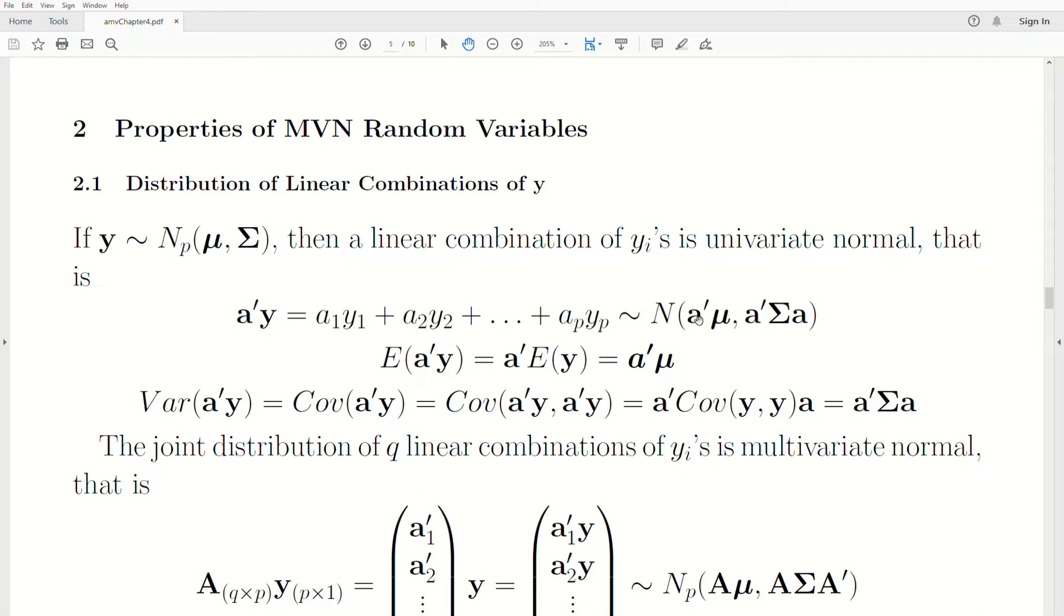Well, let's look at that. A transpose is 1 by P, the mean vector mu is P by 1, so this product is 1 by 1. The variance matrix: A transpose is 1 by P, sigma is P by P, A is P by 1, so the outer numbers is 1 by 1. So it's a scalar. They do create scalars.